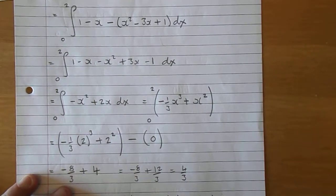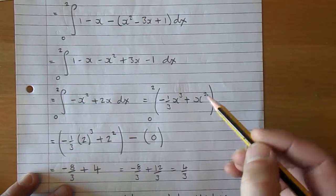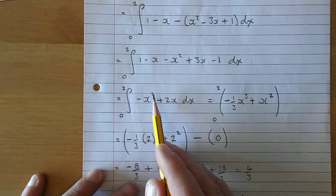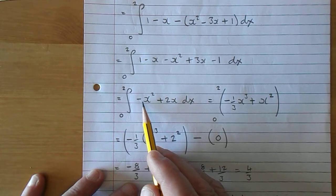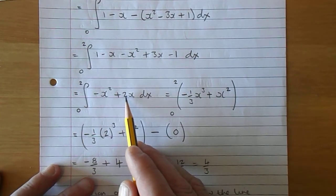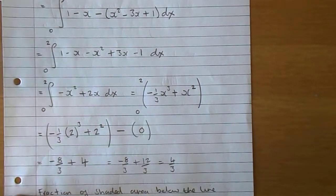So we're now going to integrate, and just for variety I've used the big brackets there. Minus x squared, if you integrate that, you get that 2 becomes a 3, minus 1 over 3x cubed. And integrating plus 2x, that integrates to plus x squared.